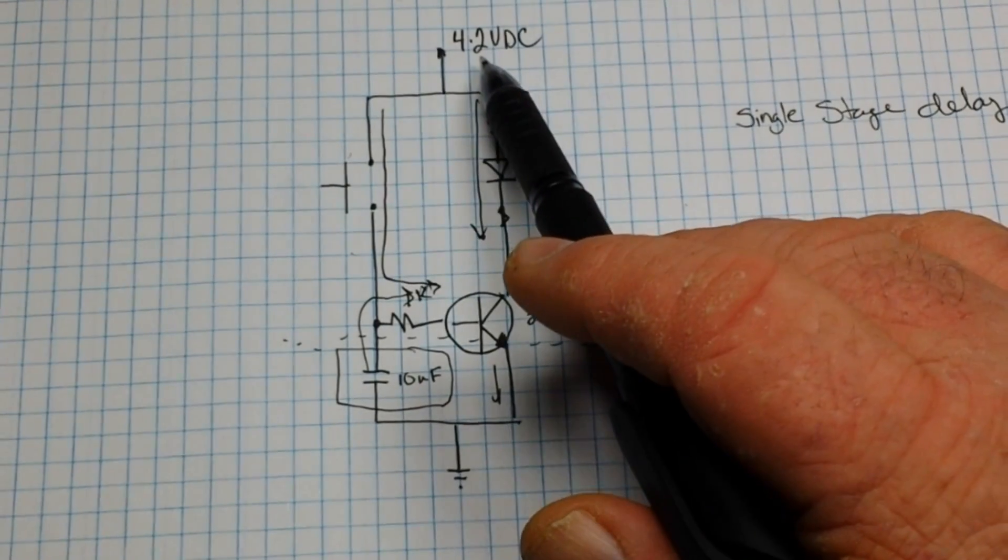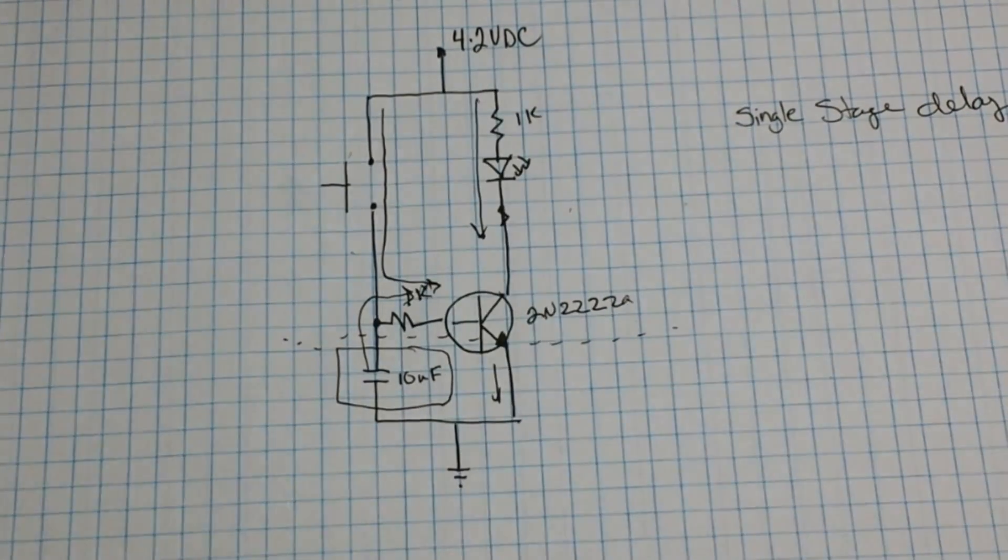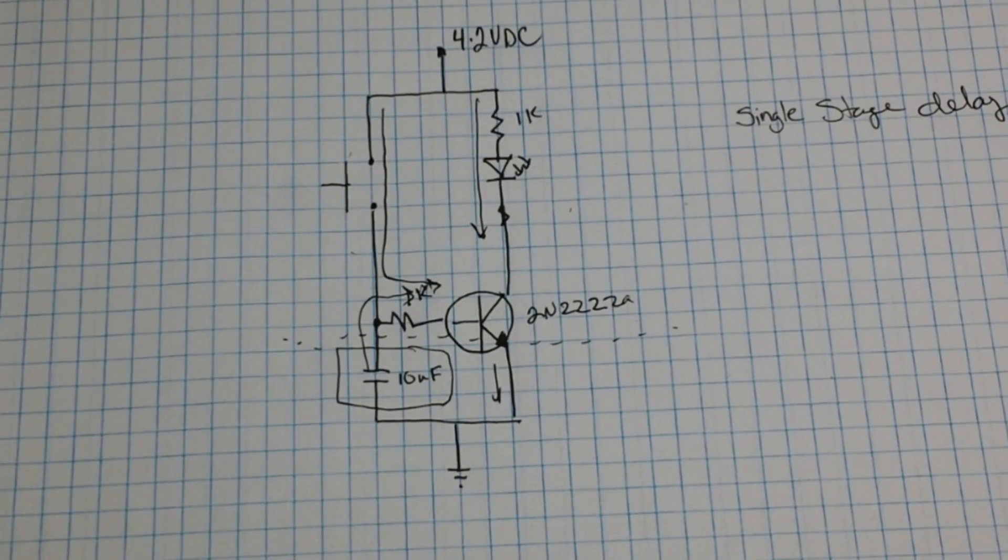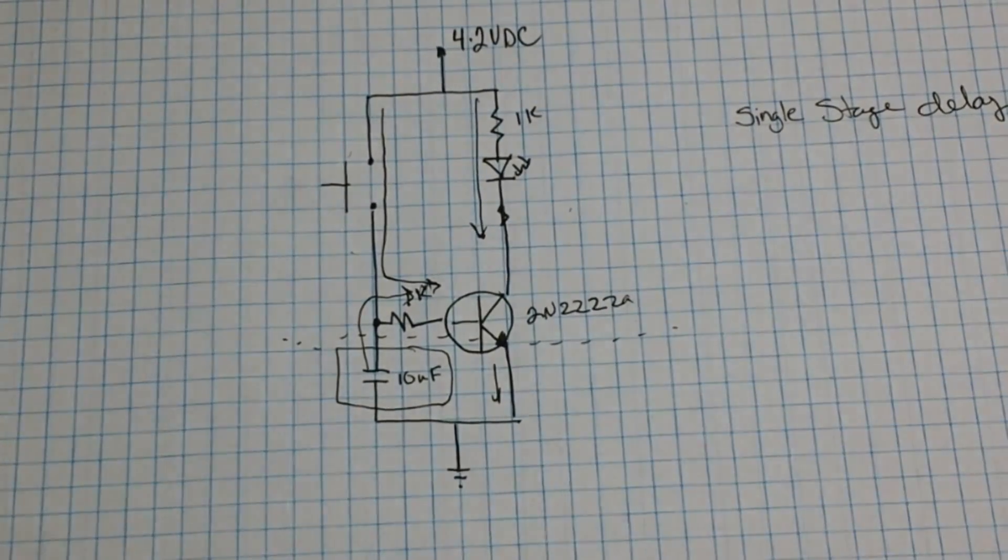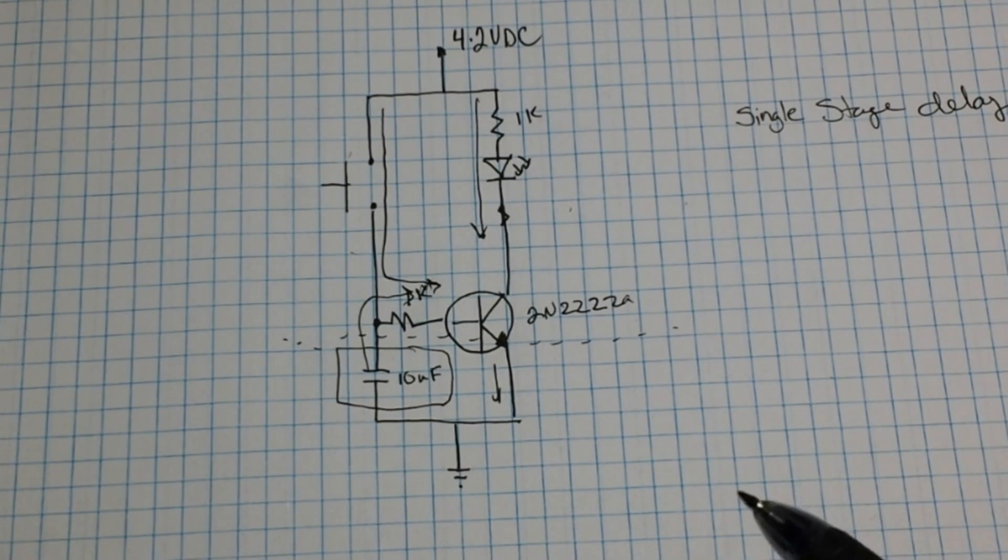We're going to be powering the circuit from 4.2 volts DC - it really doesn't matter. We're going to be lighting an LED with this circuit, so protect your LED with the proper current limiting resistor for whatever voltage you want to use. Of course, don't overvolt your transistor.